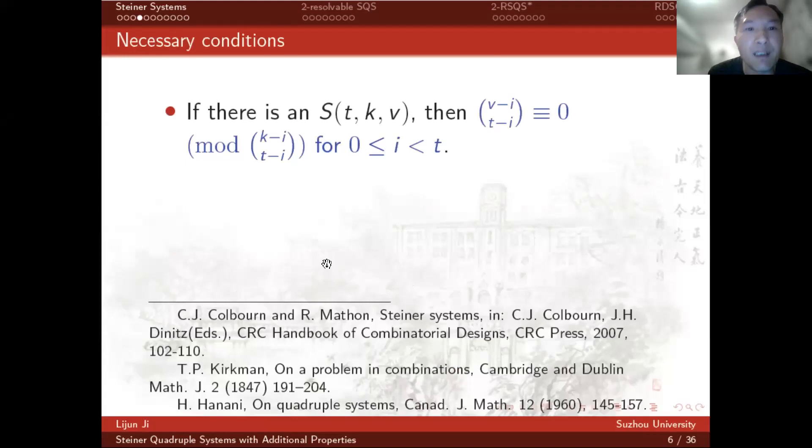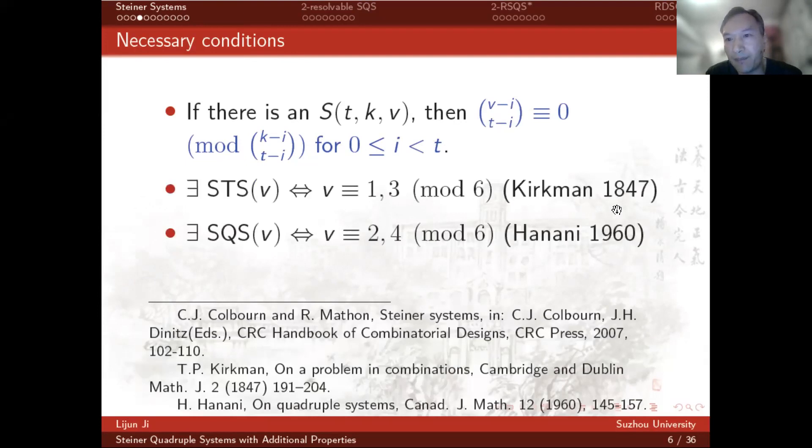It is well known that if there is a Steiner system, the parameters must satisfy certain necessary conditions. Hanani proved that there is a Steiner quadruple system of order V if and only if V equals 2 or 4 modulo 6.